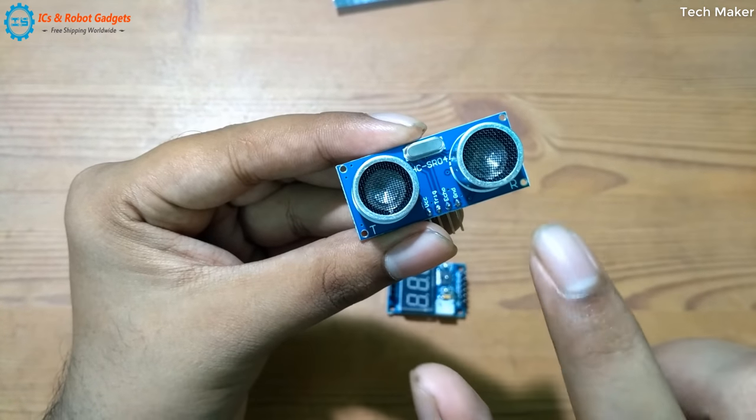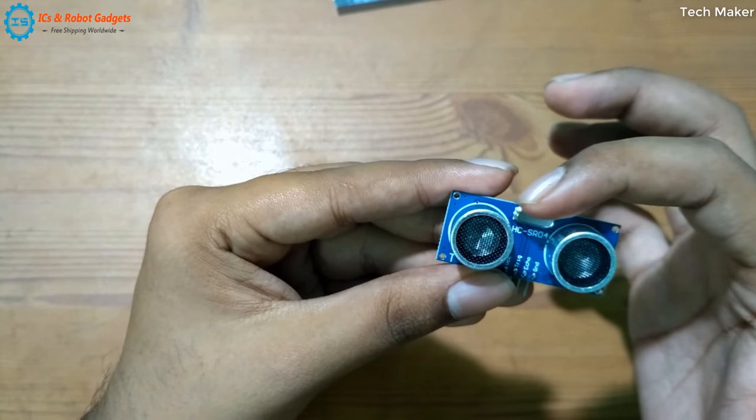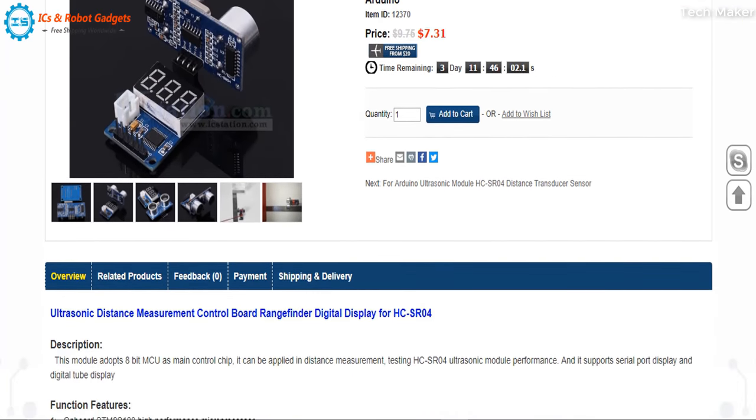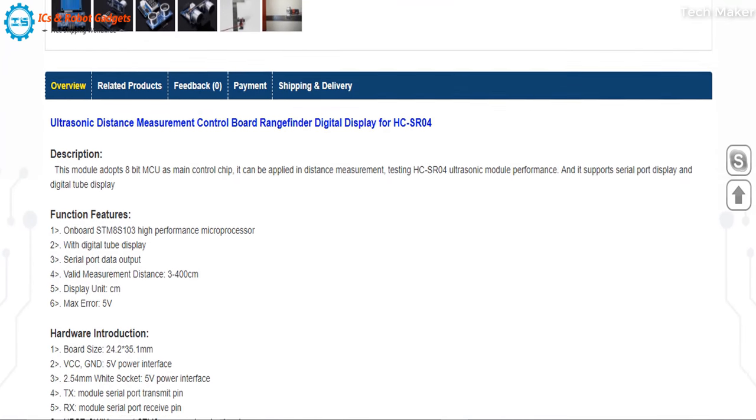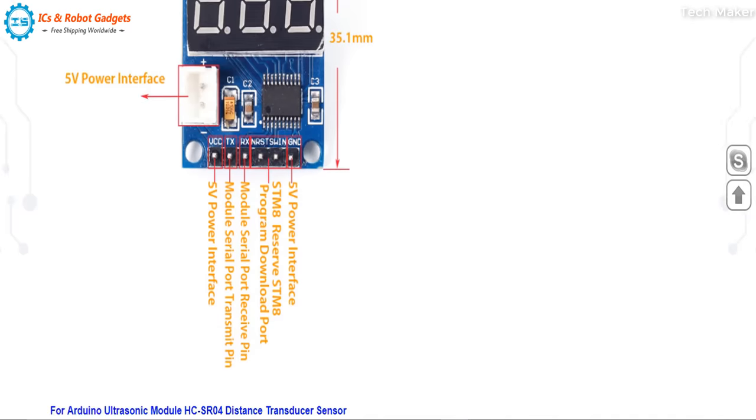Here you can see T and R. This is the transmitter and this is the receiver. You can see the crystal oscillator here. All the details about this module are available on the IC Station website where you can have all the information.